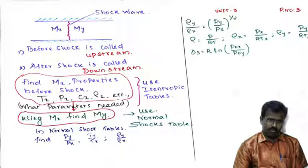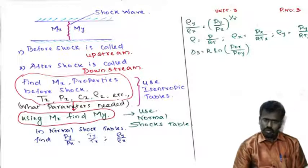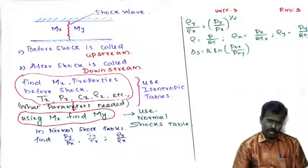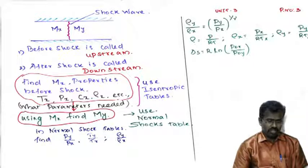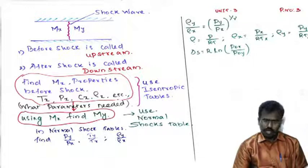These are the steps to solve problems in shockwaves. The density ratio is ρy/ρx = (py/px)^(1/γ). If they ask for Δs (entropy change), use the formula: Δs = R · ln(p₀x/p₀y).